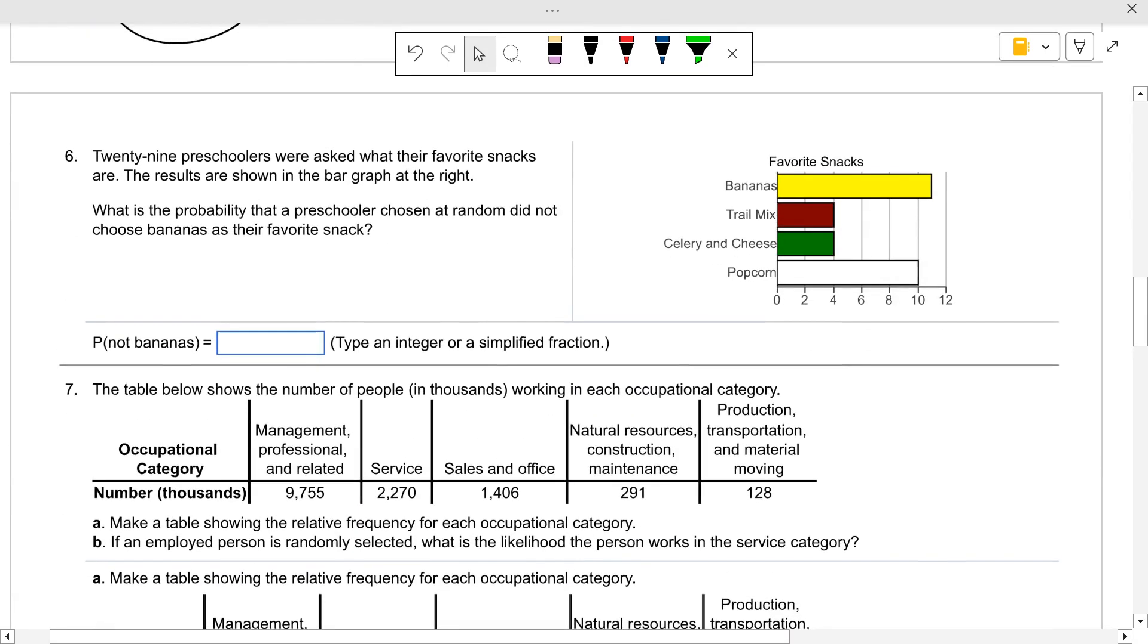29 preschoolers were asked what their favorite snacks are. The results are shown in the bar graph. What's the probability that a preschooler chosen at random did not choose bananas? If they did not choose bananas, they chose something else. Now bananas, there's 11 bananas, 4 trail mixes, 4 celery and cheeses, and 10 popcorns. So this adds up to 29 total. So if they did not choose bananas, that's these, which is 18, or 18 out of 29 are not bananas.